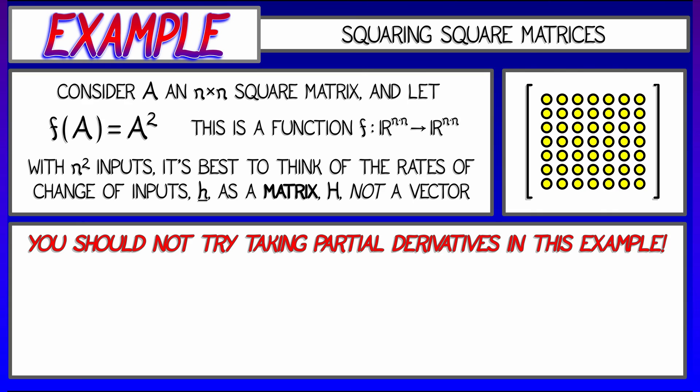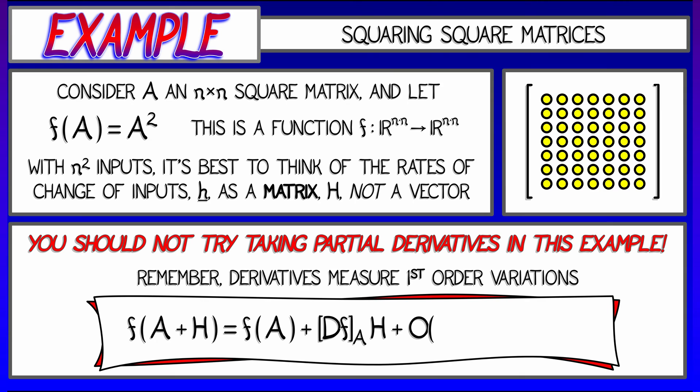What you want to do is think in terms of the definition of a derivative and look at first order variations. So consider what happens when I modify an input A by a small amount. I add this matrix H to it. Then f(A+H) is f(A) plus the derivative of f at A times H plus, you know, something that's quadratic in H. Again, this is in a limit as all the entries of H are going to zero.